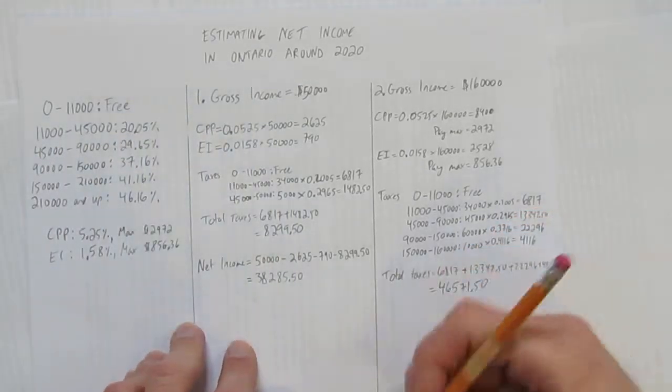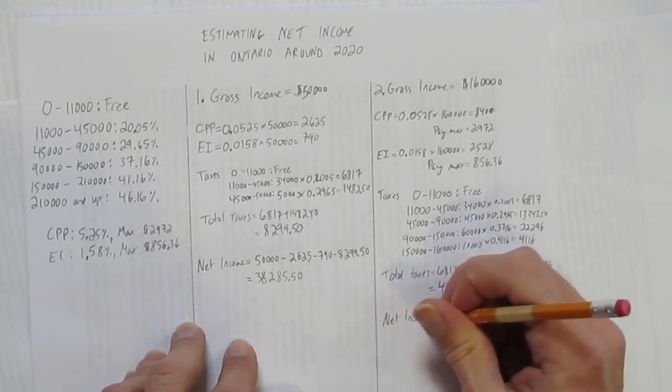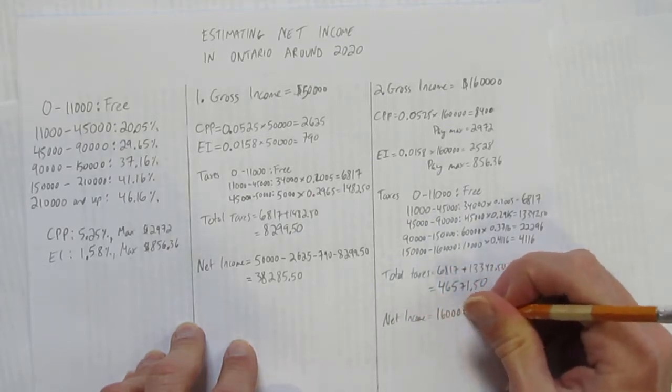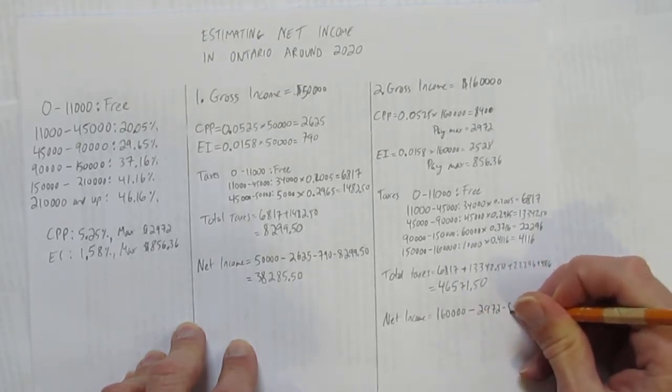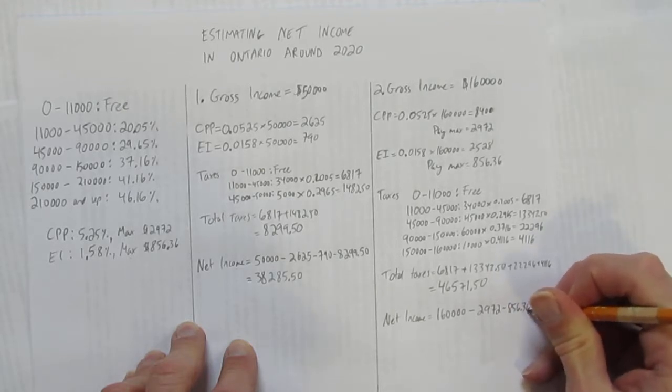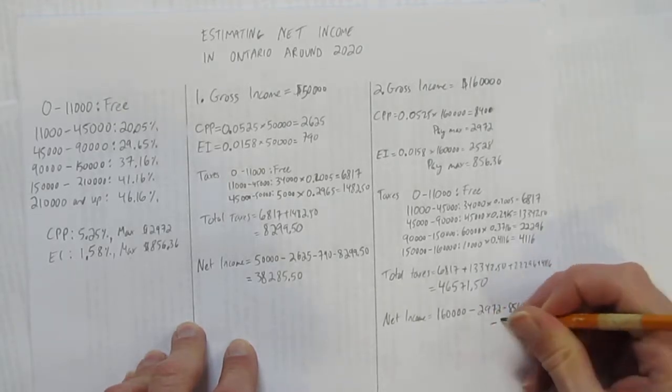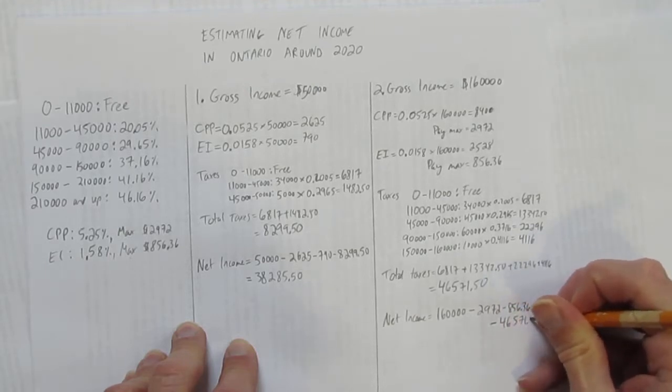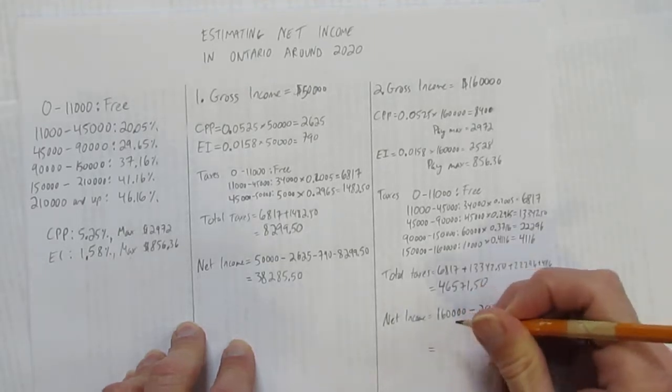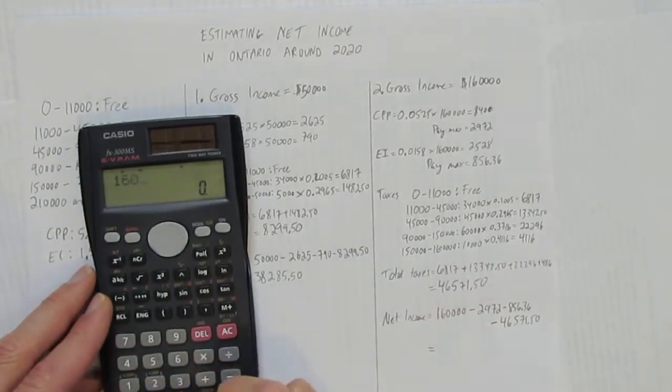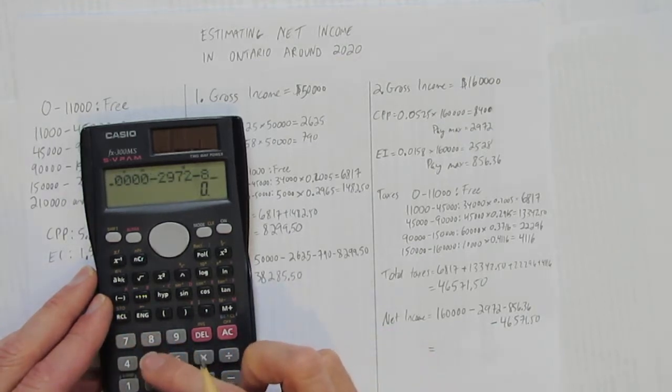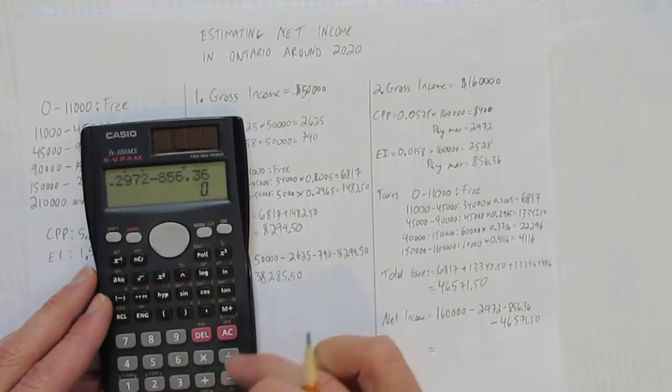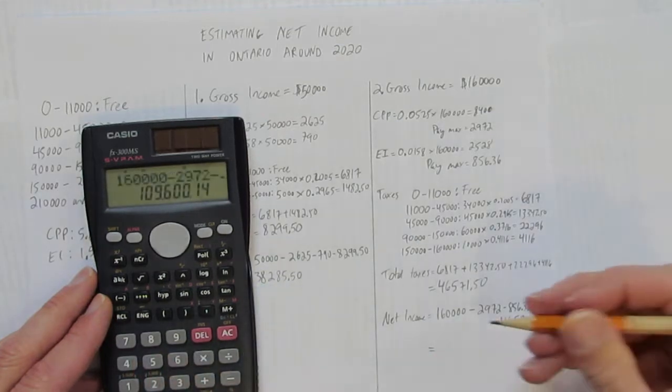And now, like before, let's calculate this person's net income. Their net income is just their total gross income, $160,000, minus their CPP, they paid the max, minus their EI, they paid the max, minus their total taxes. We're almost there. Just got to do this final subtraction for their net income. $160,000 minus $2,972 minus $856.36 minus $46,571.50.